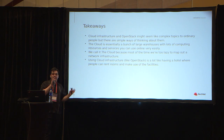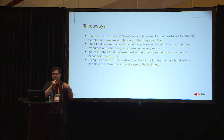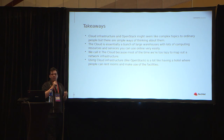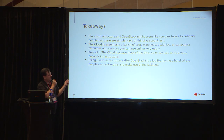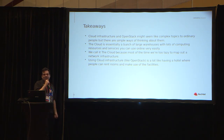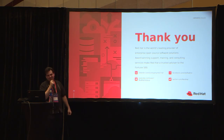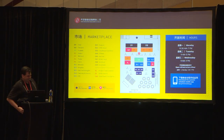So some takeaways: cloud infrastructure and OpenStack might seem like complex topics to ordinary people, but there are simple ways to think about them. Using an analogy is best — if somebody asks what the Cloud is, be straight and go with the literal representation: it's basically just a bunch of warehouses with lots of computing resources and services you can use online very easily. And we call it the Cloud because most of the time we're too lazy to map out our infrastructure. Using cloud infrastructure like OpenStack is a lot like having a hotel where people can rent rooms and make use of the facilities. And that concludes my lightning talk. Thank you very much.